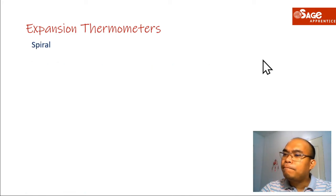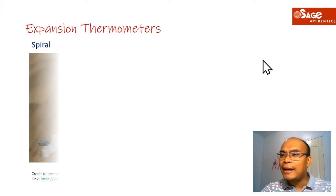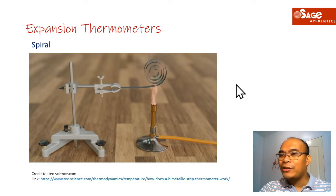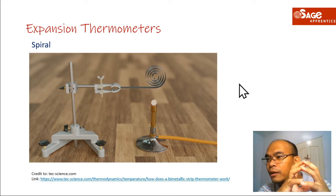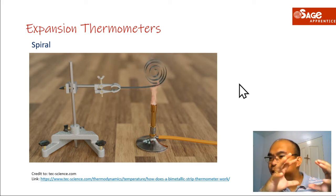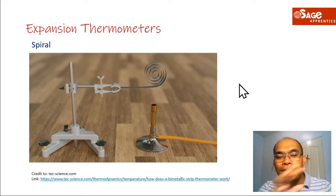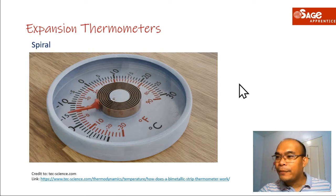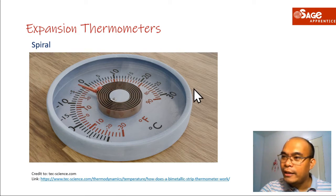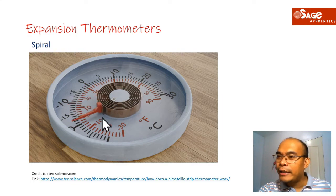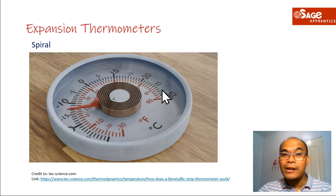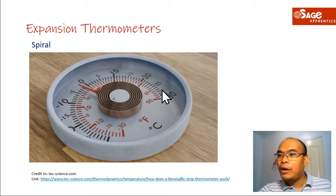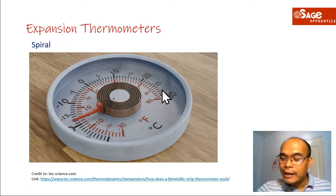Another application is the spiral bimetallic thermometer. Same concept — when a metal is heated, it expands. In the spiral thermometer, when the temperature increases, the spiral expands and the pointer moves in the positive direction. When the temperature decreases, it returns to normal. This is the simple application of spiral thermometers.